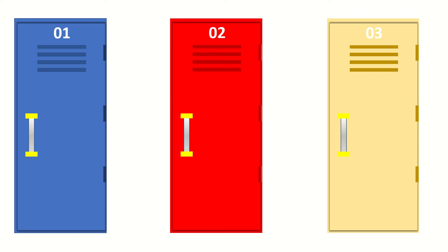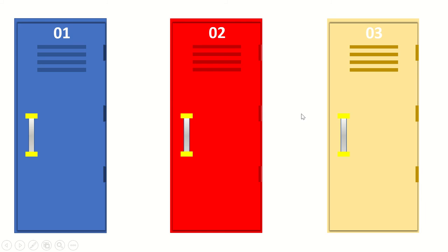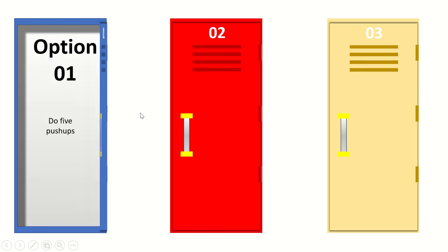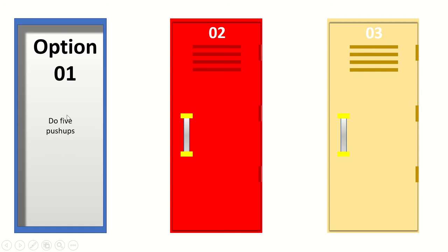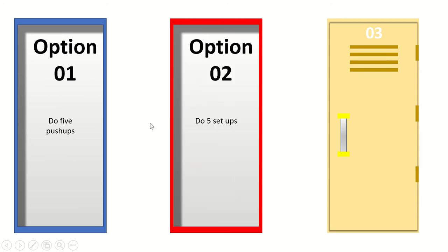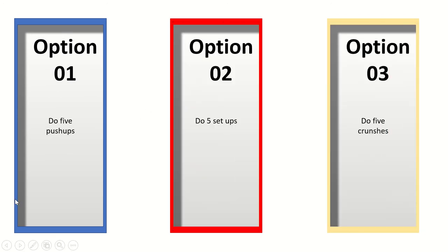So this game is like, you dare your friend to do one of three things. You can make these three lockers — one, two, and three — or you can make more. And then option one, you can write anything over here. Option two and option three. They'll pick one and they have to do it. You don't have to make it exercise; I just wrote this for an example.